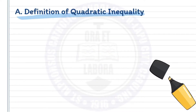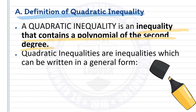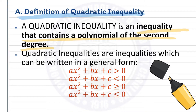Now, let's define quadratic inequality. Quadratic inequality is an inequality that contains a polynomial of the second degree. Quadratic inequalities can be written in the general form: ax squared plus bx plus c is greater than 0, or ax squared plus bx plus c is less than 0. Another way of writing is ax squared plus bx plus c is greater than or equal to 0, or ax squared plus bx plus c is less than or equal to 0.